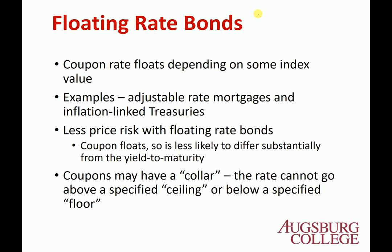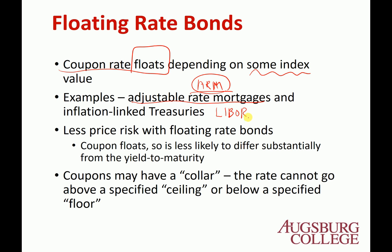Floating rate bond — the coupon rate changes depending on some index value. An example is the adjustable rate mortgage, or ARM. The mortgage rate changes by a certain interest rate index, usually called LIBOR — the London Interbank Overnight Rate. If interest rate increases, then your mortgage rate increases. A lot of times, there are some fixed terms, such as five years where you pay a fixed interest rate, and then after that, every year your interest rate changes based on LIBOR plus 2.5 percentage points, or LIBOR plus 2.25 percentage points.